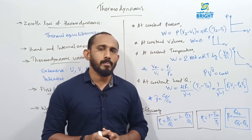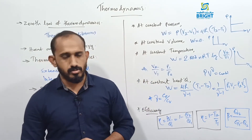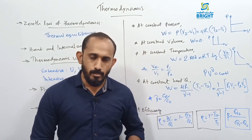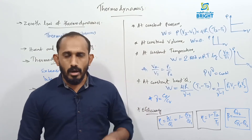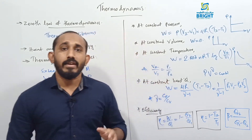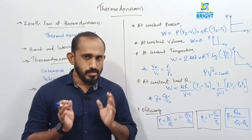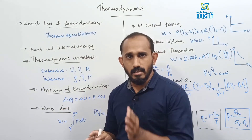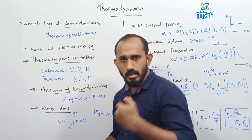The major topics of this chapter are three laws: the Zeroth Law gives the concept of thermal equilibrium; the First Law gives the concept of work done, heat, and internal energy change; and the Second Law gives the working of heat engines and refrigerators. From the First Law: delta Q is positive when heat is given to the system, and negative when heat is released from the system.